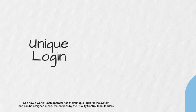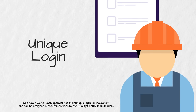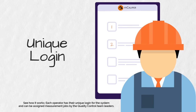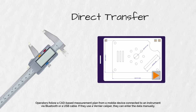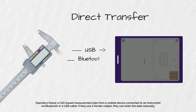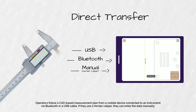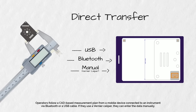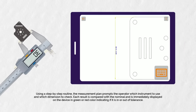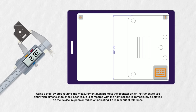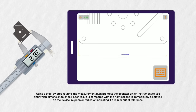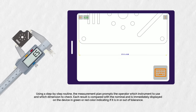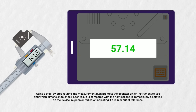See how it works. Each operator has their unique login for the system and can be assigned measurement jobs by the quality control team leaders. Operators follow a CAD-based measurement plan from a mobile device connected to an instrument via Bluetooth or a USB cable. If they use a vernier caliper, they can enter the data manually. Using a step-by-step routine, the measurement plan prompts the operator which instrument to use and which dimension to check. Each result is compared with the nominal and is immediately displayed on the device in green or red color, indicating if it is in or out of tolerance.